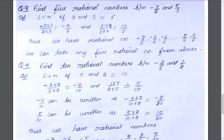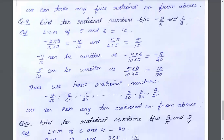Question 10: find 10 rational numbers between minus 2 by 5 and 1 by 2. The denominators are 5 and 2. If we take both LCM, we get 10. For minus 2 by 5 with denominator 10, we multiply by 2, giving minus 4 by 10. For 1 by 2 with denominator 10, we multiply by 5, giving 5 by 10.